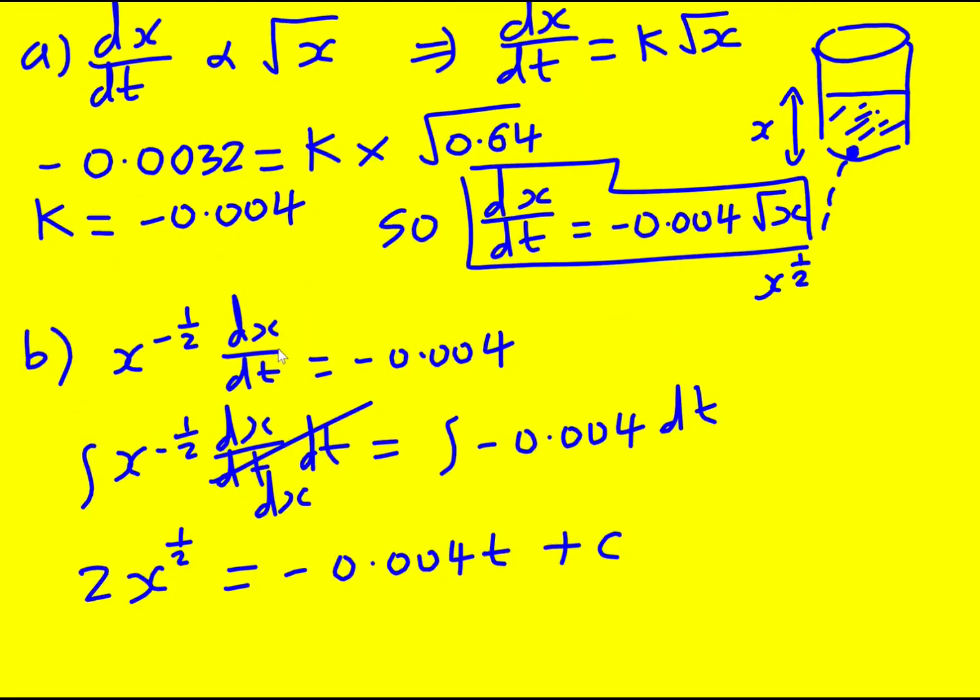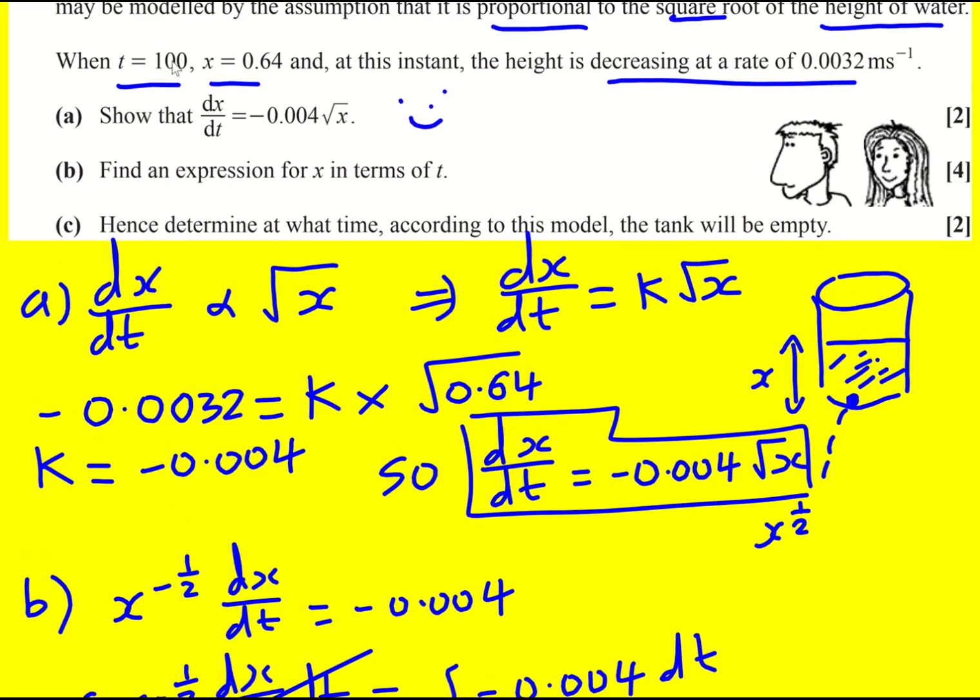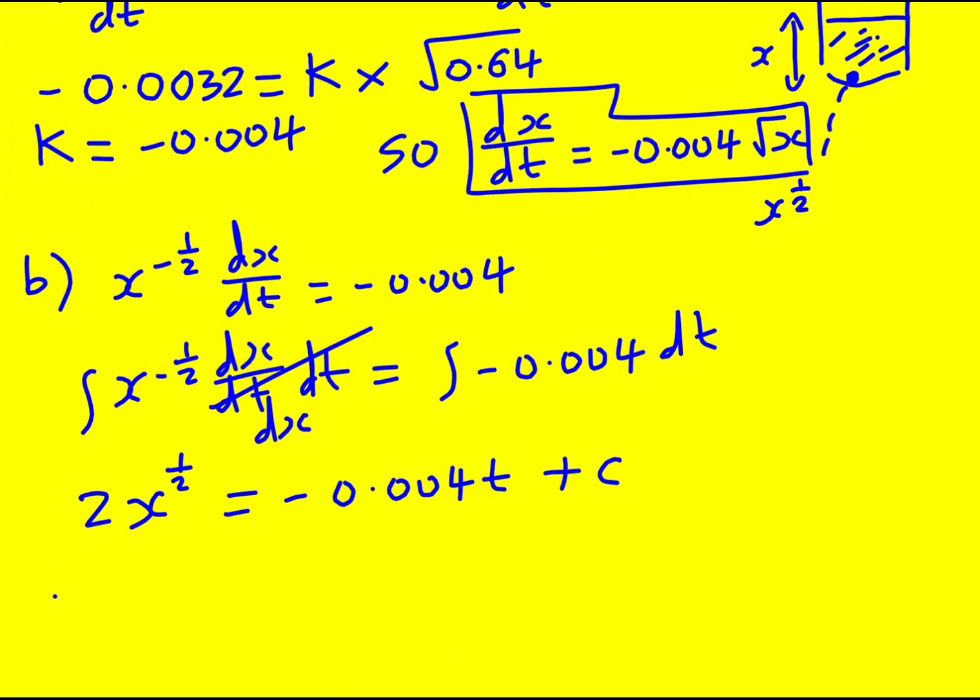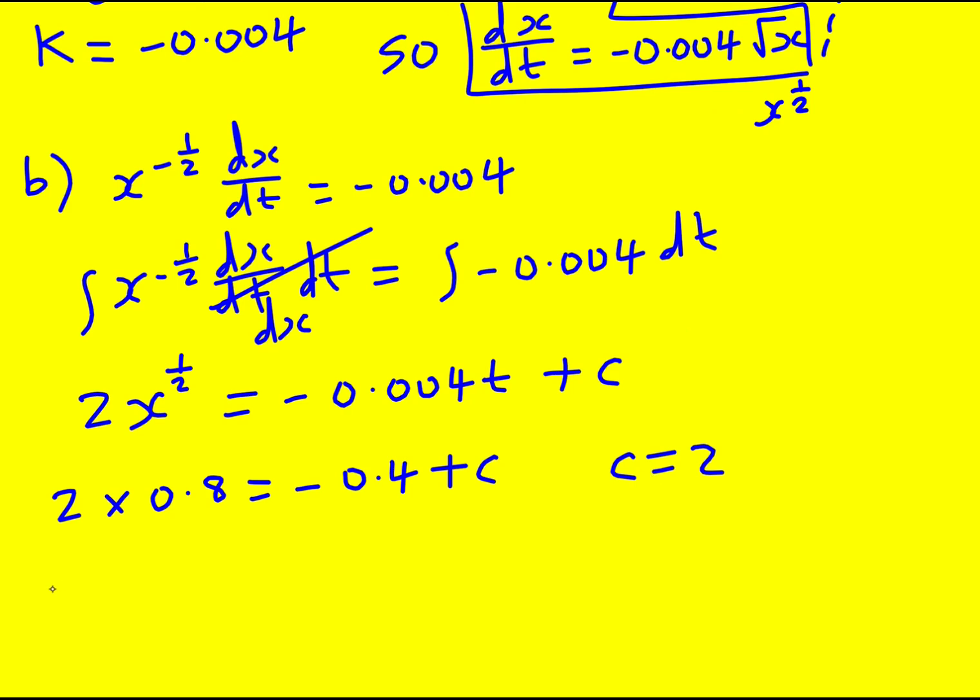And I'm going to put my boundary condition in, it's some sort of condition. t is 100 and x is 0.64. So we're going to get 2 times the square root of 0.64, which I said as before is 0.8, and that is going to be minus 0.4 plus c. That's 1.6 plus 0.4, c is actually 2. So I get 2 times the square root of x is equal to minus 0.004 t plus 2.